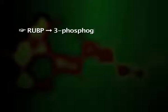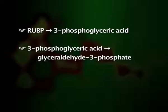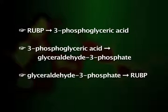The Calvin cycle proceeds in three stages: number one is the carboxylation of the carbon dioxide acceptor RuBP, forming two molecules of 3-PGA, the first stable intermediate of the Calvin cycle. Number two is the reduction of 3-PGA to glyceraldehyde 3-phosphate, a carbohydrate. Number three is the regeneration of the carbon dioxide acceptor RuBP from glyceraldehyde 3-phosphate.